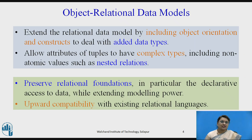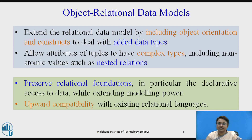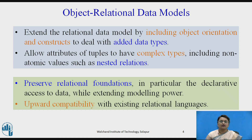How does this object-relational data model work? Basically, the normal relational data model is extended by including object-oriented programming concepts to deal with any kind of data types. The object-oriented database extends the added data types and allows attributes of tuples to have complex types, including atomic values and nested relations — where one relation is connected with another.